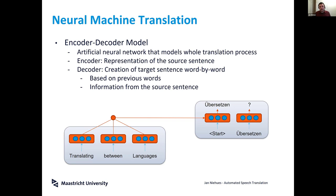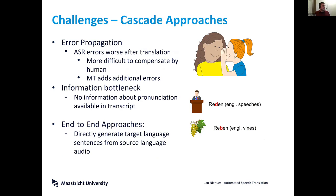Now let's look at the challenges where these systems still have problems and where they are working well. The first challenge comes from the idea of concatenating several components — putting ASR behind MT and so on. You can imagine this leads to a problem: if one system makes a mistake, the others find it really hard to recover.